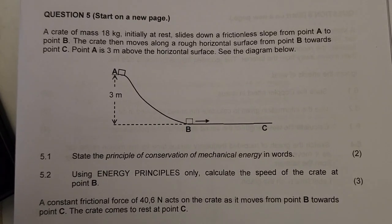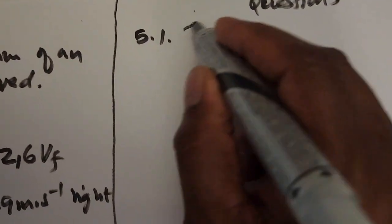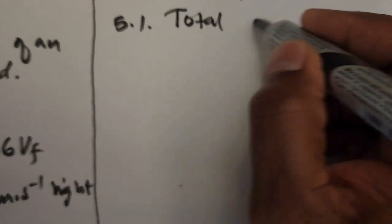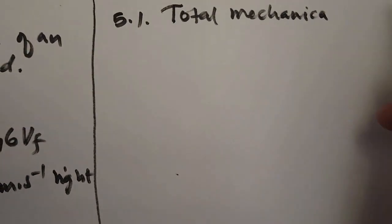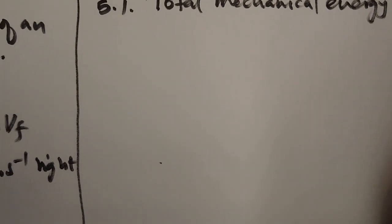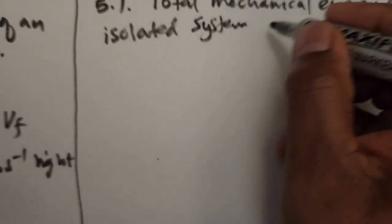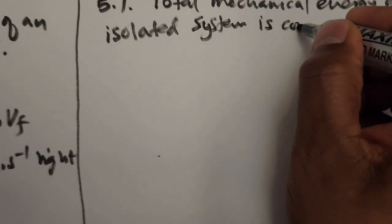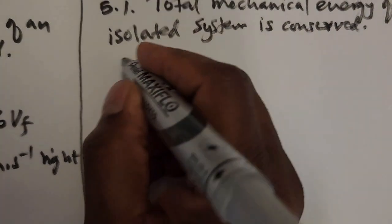Question 5.1 asks us to state the conservation of mechanical energy. Similar to the momentum definition earlier: the total mechanical energy of an isolated system is constant.